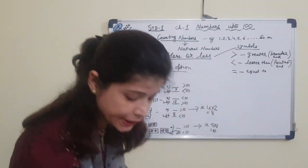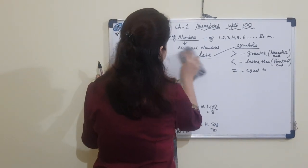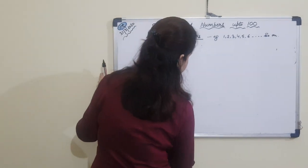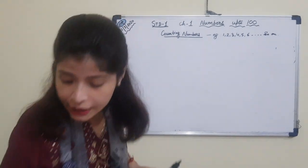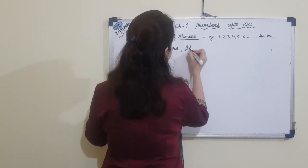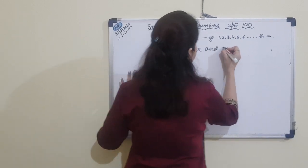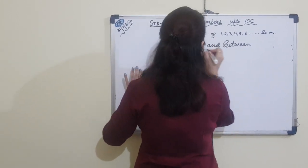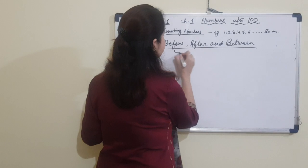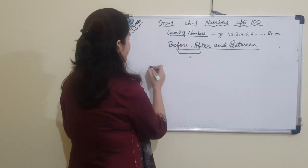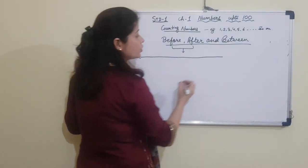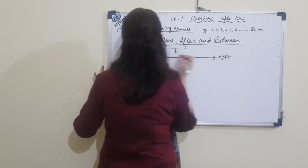Now we will come to the second topic: before, after and between. This is a very important topic and many students make mistakes here. First, you have to understand the number line. The number line always starts from the left-hand side and goes towards the right-hand side, starting from zero.